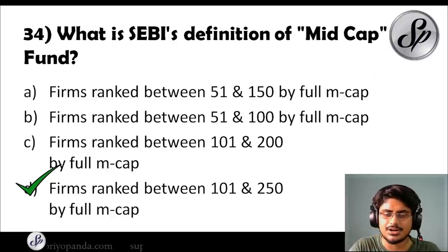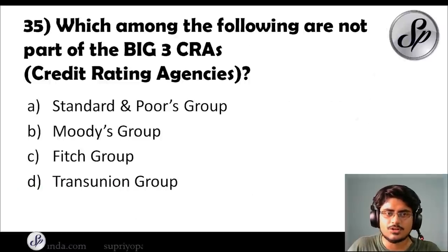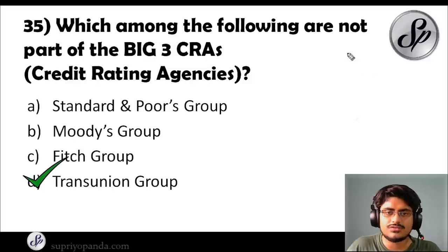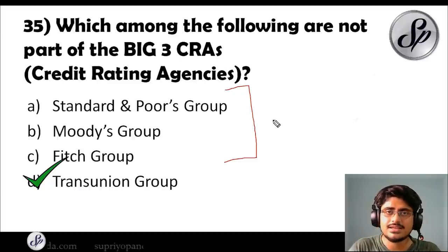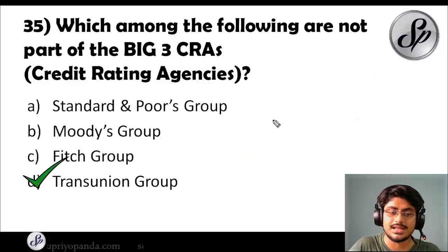Question thirty-five: which among the following is not part of the 'Big Three' credit rating agencies (CRAs)? The answer is TransUnion Group. Standard & Poor's, Moody's, and Fitch Group are the Big Three CRAs — the top credit rating agencies in the world. Remember these three names very, very well.